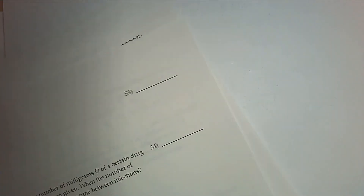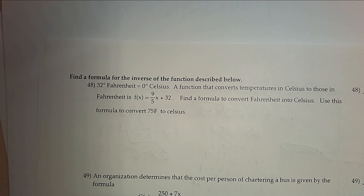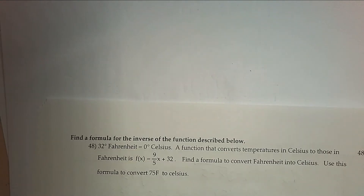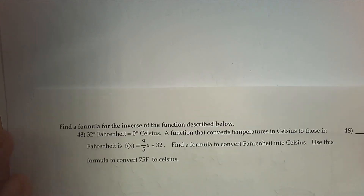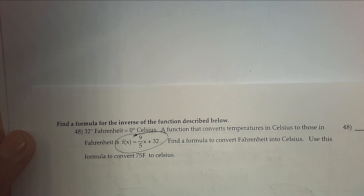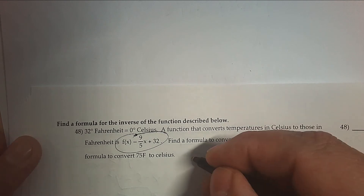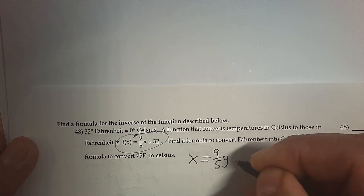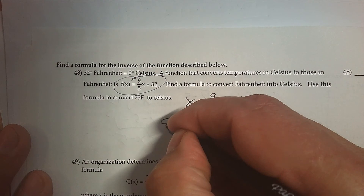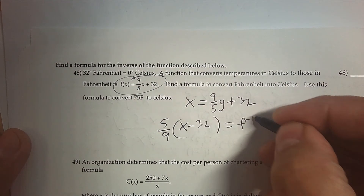That's up to question number 47. The next video will be 48, probably to the end. Let me do two more before the bell rings. Number 49: you have a formula to convert from Celsius to Fahrenheit. Find a formula to go in the other direction. Write x = (9/5)y + 32, then subtract 32, and then do the reciprocal to get y by itself. That will be the inverse.